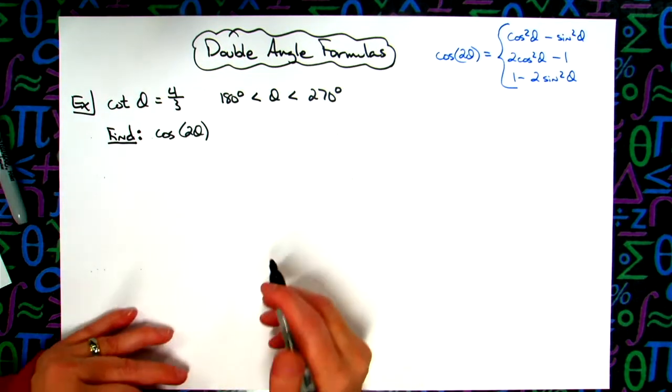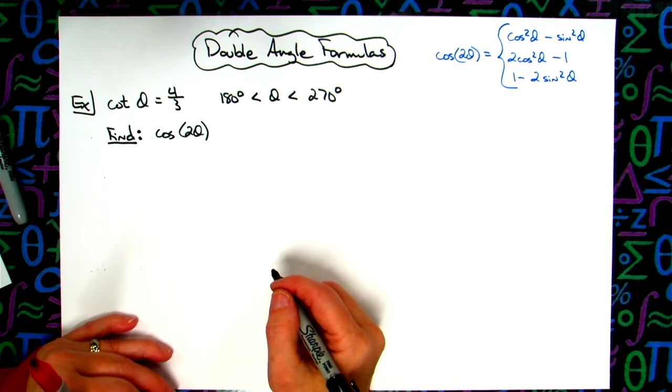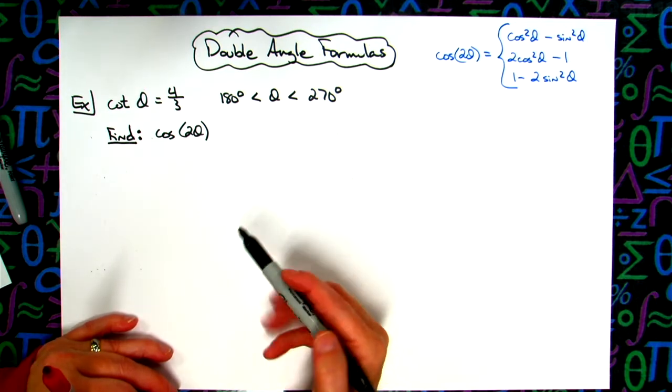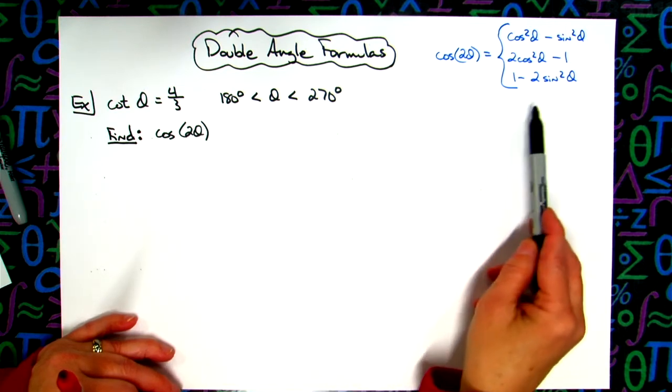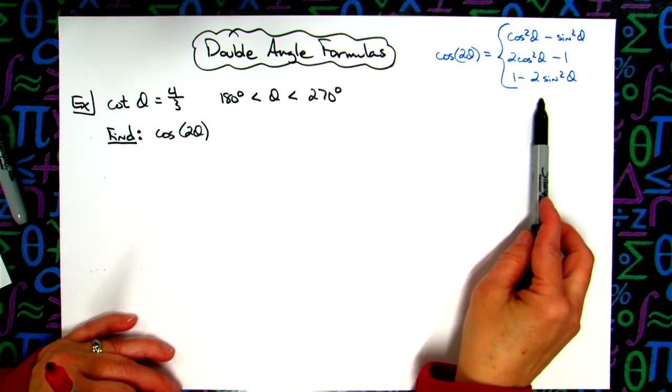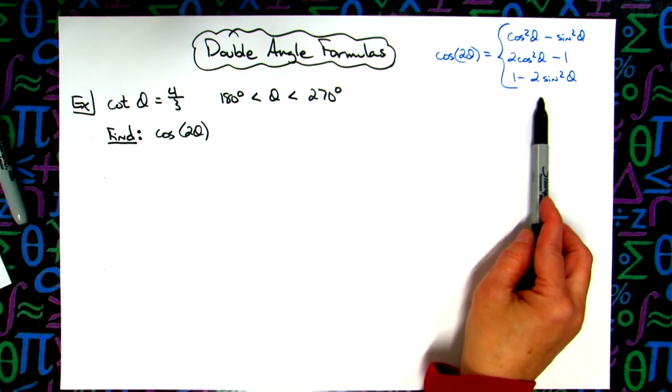In this video we're going to take a look at a double angle problem that involves our double angle formulas. We're specifically going to be looking for cosine of 2θ, and up here for reference I have given the three possible double angle formulas for that cosine of 2θ.